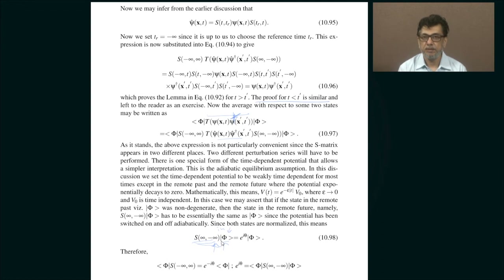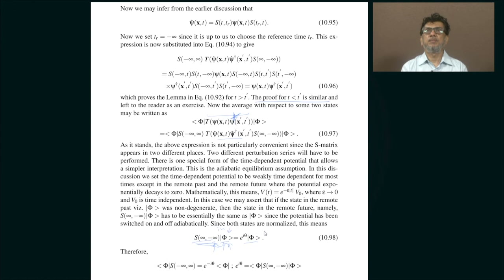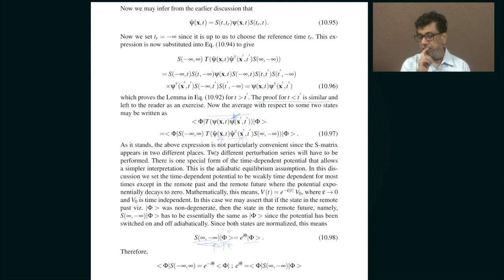We postulate that the initial state is non-degenerate. If you slowly switch on and slowly switch off, having switched off the system is back in the original state. The worst that can happen is that the two wave functions differ by a phase. So there is this S-matrix acting on the state, and you get a phase. By the way, in the interaction picture the operators change according to the unperturbed Hamiltonian, and the states evolve according to the S-matrix, which represents the perturbation.